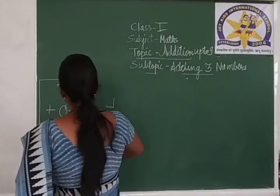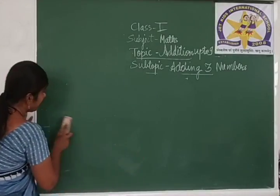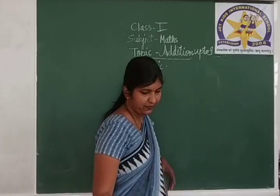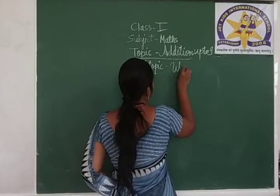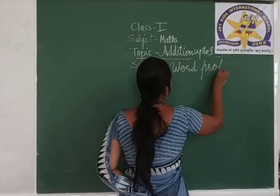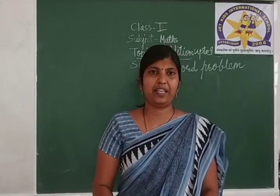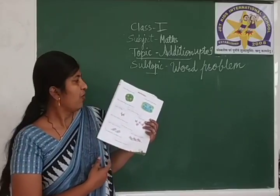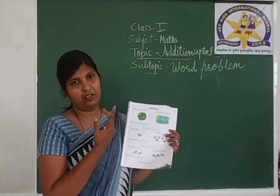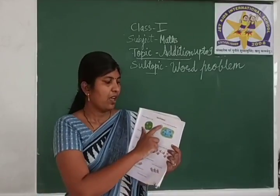You know how to add numbers vertically, how to add 3 numbers. But now we are going to see how to solve word problems. See the example here. What can you see? One leaf is there, and on that leaf two frogs are sitting. Two frogs are sitting on a leaf.